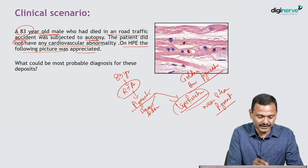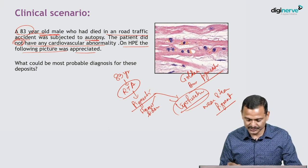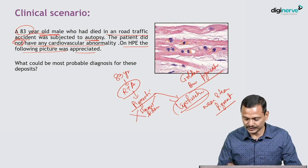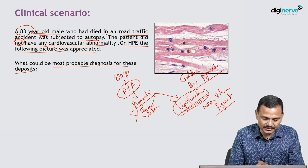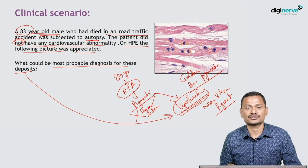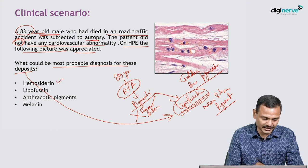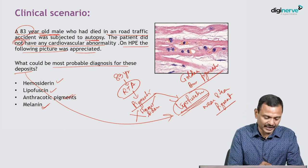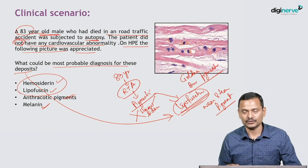There are two possibilities: hemosiderin or lipofuscin. But there is no cardiovascular abnormality, so there is no chance of any hemorrhage and necrosis. Therefore, hemosiderin is almost ruled out, and we are left with lipofuscin. The most possible diagnosis for these deposits is lipofuscin pigment. Melanin and anthracotic pigments cannot come in the heart, so they are excluded. Hemosiderin has also been excluded, leaving lipofuscin as the answer.